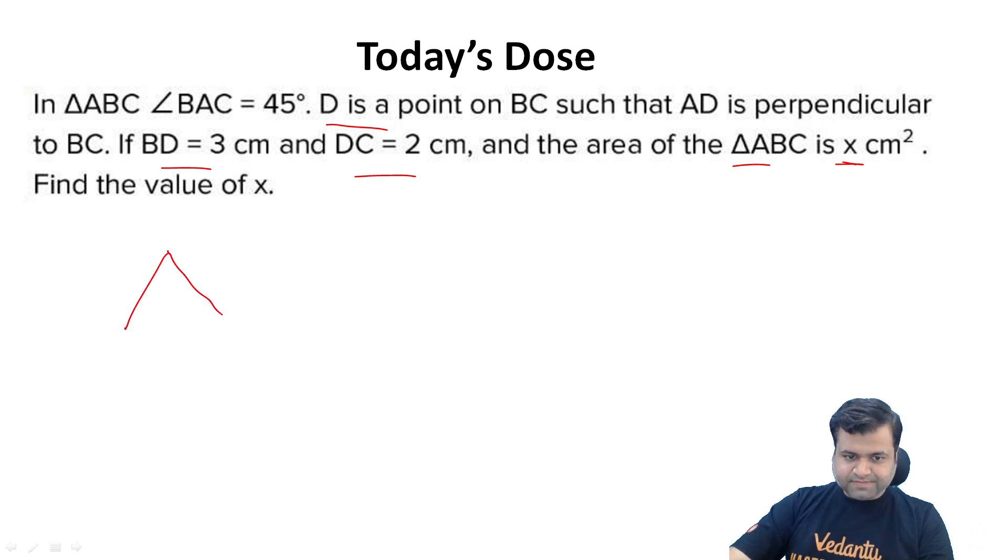Let's consider a triangle A, B, C. The question is that BAC angle is 45 degrees. This is exactly 45 degrees. D is a point on BC such that AD is perpendicular to BC. So, this is perpendicular.